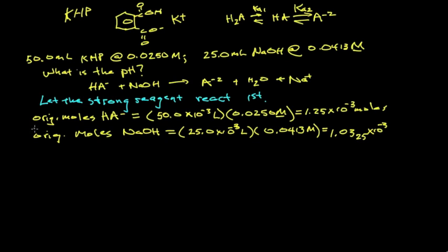So we see there's an excess or a greater quantity of HA. All of the sodium hydroxide will be used up, and we'll have remaining some HA and we'll form some A2 minus. This is the important equilibrium that will be involved, and in our weak acid-base equation, we want to use Ka2.